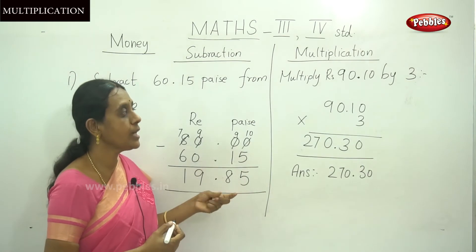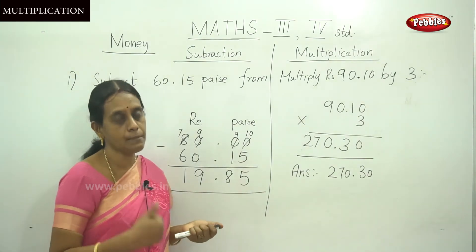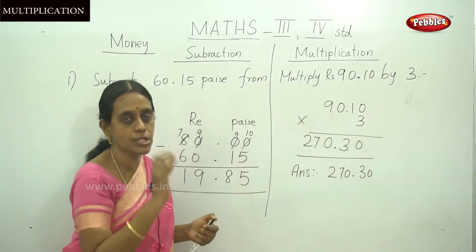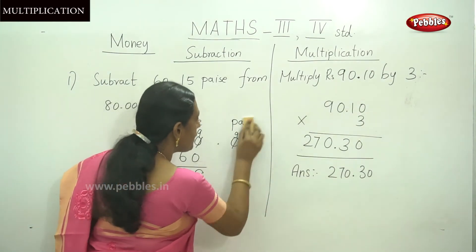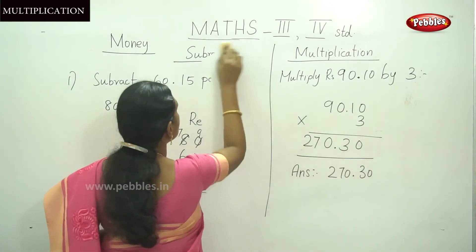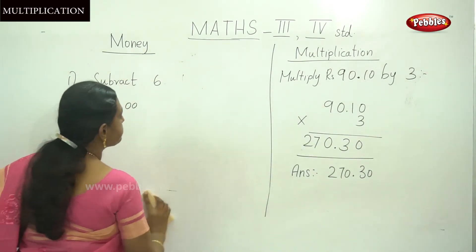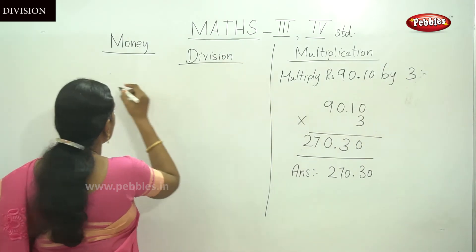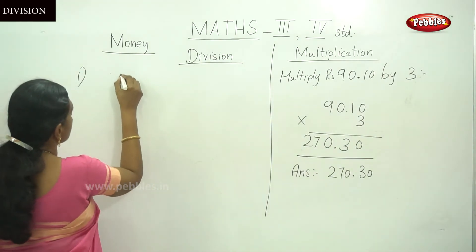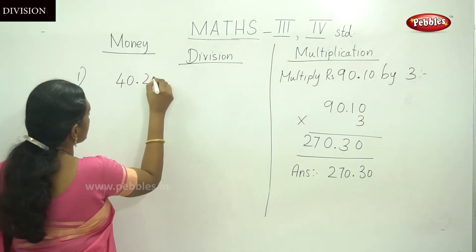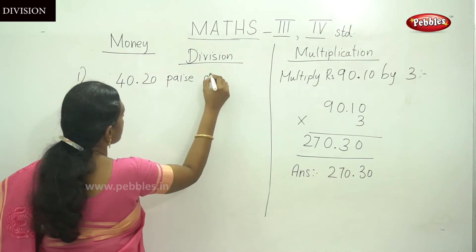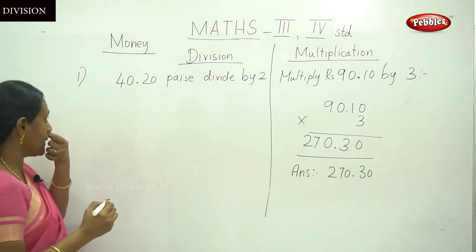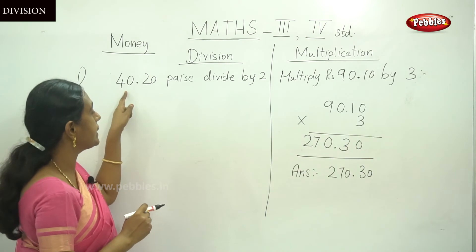Next we are going to a Division sum — how to do division and make word problems of addition, subtraction, multiplication, and division with example sums. The question is: 40 Rupees 20 Paise divided by 2.